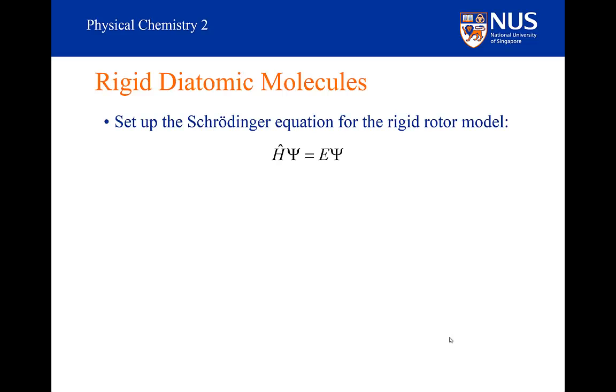In order to set up the Schrödinger equation, we need to know what the Hamiltonian is for my rotating system. It looks like this. Note that the mass that appeared in the Hamiltonian for the particle in the box has been substituted with the moment of inertia.